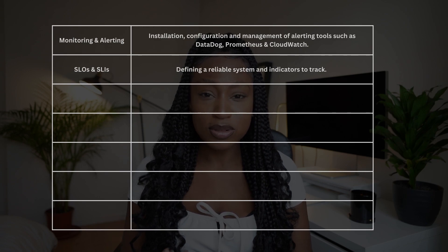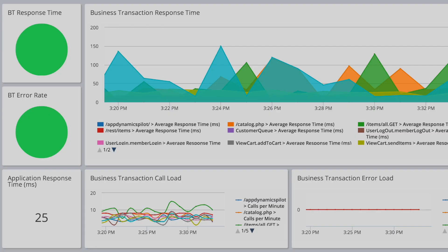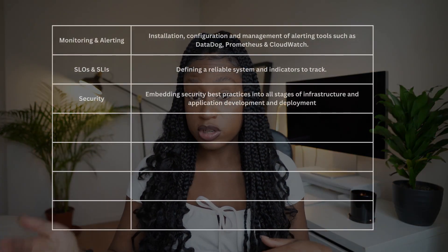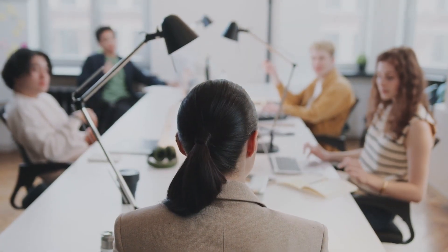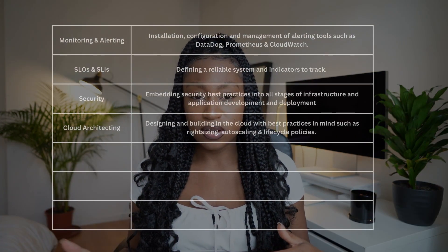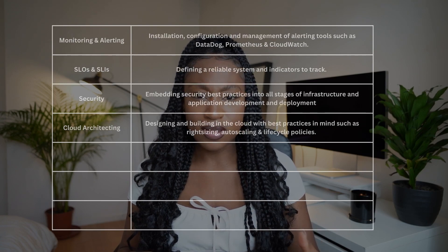SLOs and SLIs is all about defining what a reliable system looks like and how you will measure it. What indicators will you use? What will define availability — will it be error rates? What will define latency? We also have some other skills built in with cloud and security practices and automation — maybe you wrote some scripts to get that done. Then it's lunchtime. You take a break and come back for a meeting where you were asked to prepare for a cloud cost optimization task. You've been charged with reducing the costs of your AWS environment whilst ensuring there are no negative impacts on performance. You have more skills to add here: cloud architecting, knowledge of right-sizing, auto-scaling, and maybe lifecycle policies.